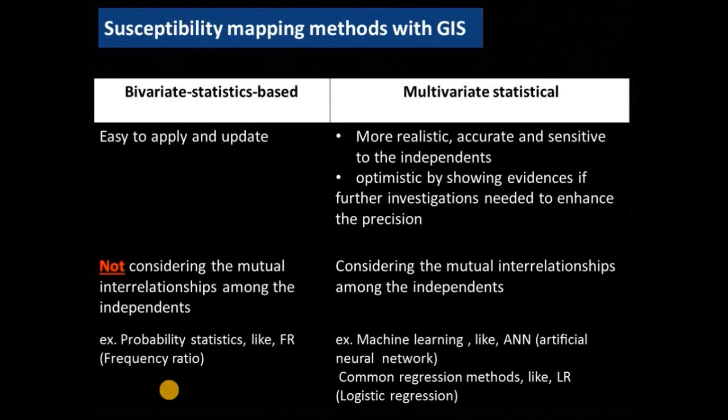Most common examples of bivariate methods include the frequency ratio. The multivariate statistical methods are more realistic, more accurate, and sensitive. We can see there will be more statistical tests about the correlations, about the variances, and also the mutual interrelationships among the independents. Most common methods include artificial intelligence and regression methods like logistic regression.